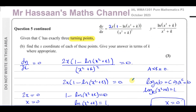That concludes question number 5 from the October 2023 Pure Mathematics P3 paper from Edexcel International A-Level. Other questions from this same paper can be found in the playlist. You'll also find a playlist for differentiation from P3 covering the quotient rule, product rule, chain rule, and related topics. If you haven't subscribed, please do so, and thank you for watching — see you soon.